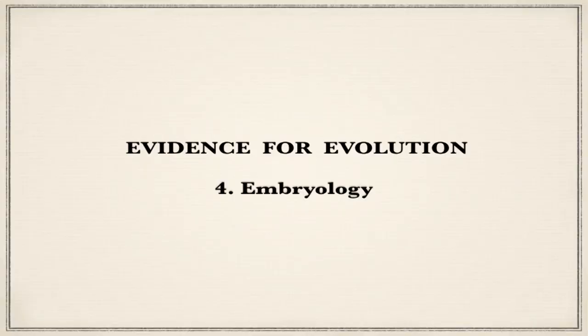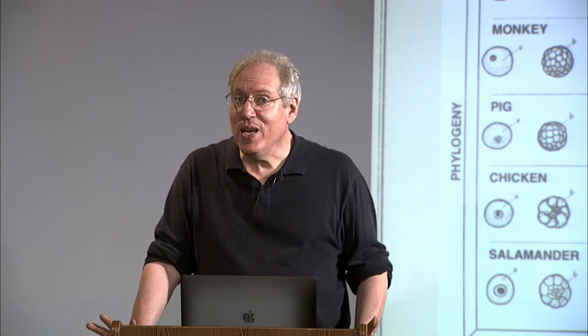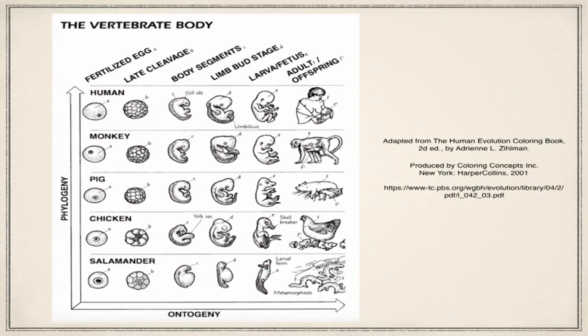The fourth category of evidence for evolution is embryology. Humans early on have a tail, for example. Comparing various species — human, monkey, pig, chicken, salamander — we all have tails at the beginning because we have a common ancestor. The tail ends up being shaped a little differently for each creature. For humans, we totally lose it by the time we're born. Comparing a cat embryo to a human embryo, you can see we both have tails. And looking at embryonic development of a human, the tail is quite long at the beginning and slowly gets reabsorbed into the body.